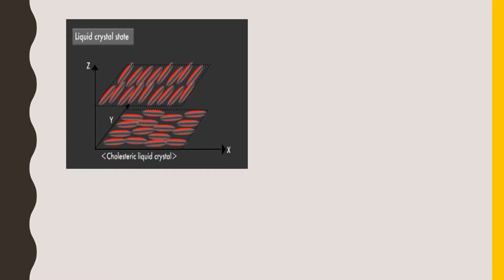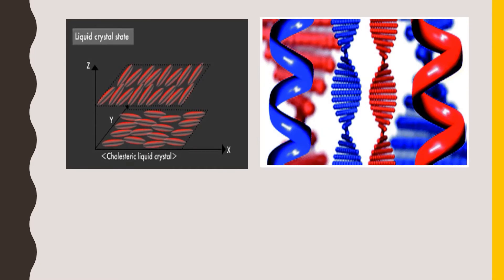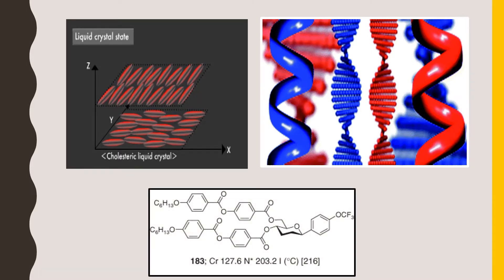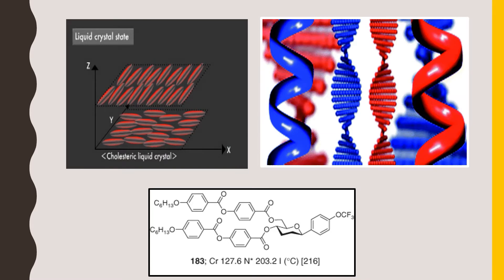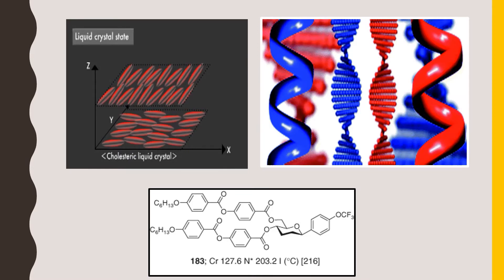Cholesteric liquid crystals are a fascinating categorization from the liquid crystalline family, largely due to their unique optical properties imparted by their helical structure. The name cholesteric originates from the fact that many derivatives of cholesterol are capable of forming this phase of matter. These liquid crystals are also called the chiral nematic phase, because one of the necessary conditions for the formation of cholesteric mesophase is chirality.